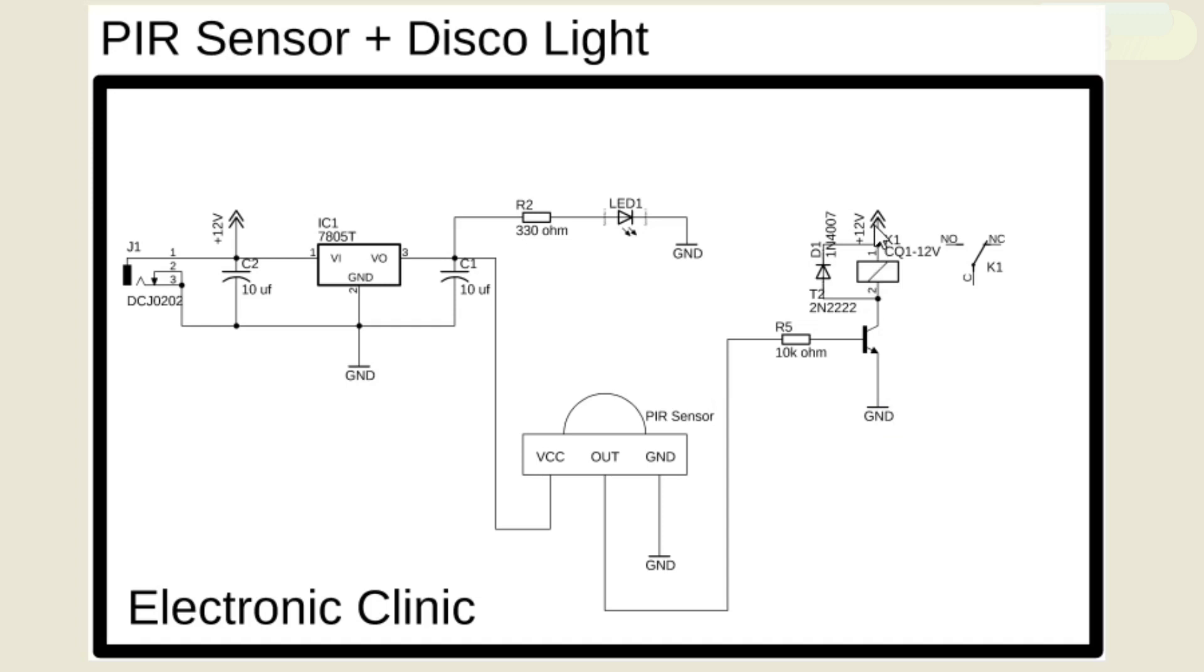And the relay coil other side is connected with the 12 volts. The relay driver circuit simply consists of the 2N2222 NPN transistor and a 10k resistor. If you want to learn the relay driver circuit design calculations then watch my tutorial. The link is given in the description.